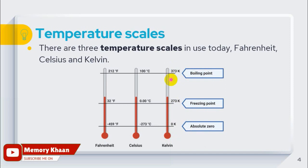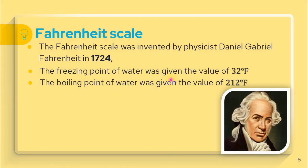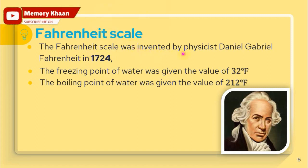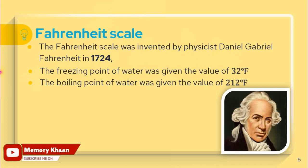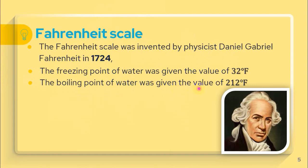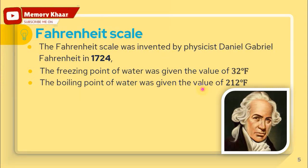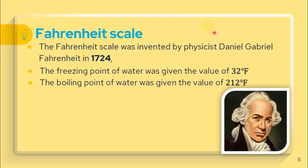Fahrenheit was invented by physicist Daniel Gabriel Fahrenheit in 1724. The freezing point of water was given the value of 32 degrees Fahrenheit, and the boiling point of water was given the value of 212 degrees Fahrenheit.